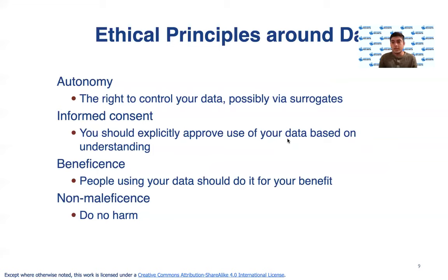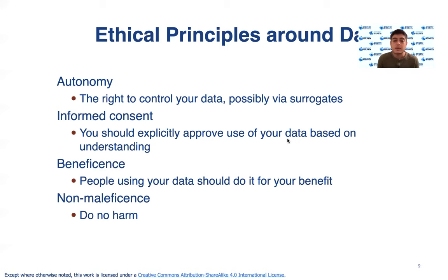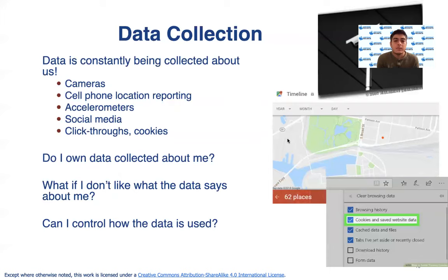Let's talk about the ethics that surround data. There are a couple of core principles that govern ethics surrounding data: autonomy, informed consent, beneficence, and non-maleficence. Autonomy refers to every individual's right to control their own data. Informed consent refers to explicit consent being obtained from individuals whose data you're using. Beneficence means the data should only be used for the individual's benefit, and non-maleficence means it should not be used for harm.